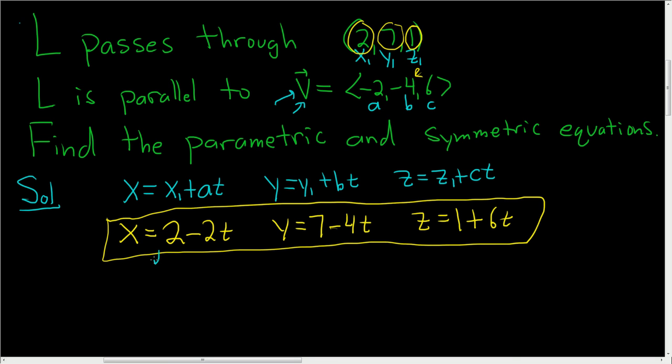So to solve this first one for T, let's do it all at once. We'll subtract the 2, so we'll get X minus 2, and then we'll divide by the negative 2. So that's T. Here we would subtract the 7, so we would get Y minus 7. Then we would divide by the negative 4, so that's also T. Here we would subtract 1, so we would get Z minus 1. Then we would divide by the 6, so that's also T.